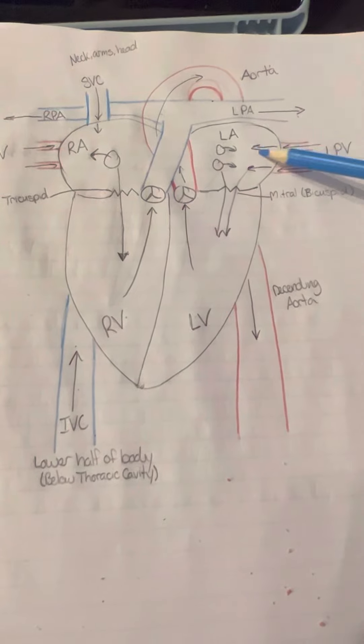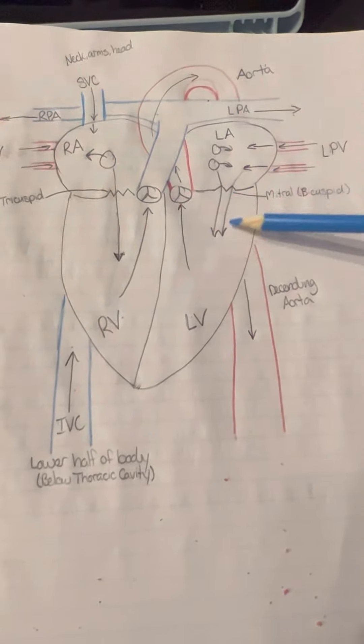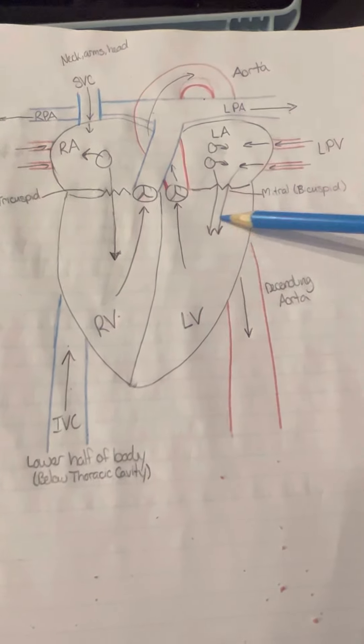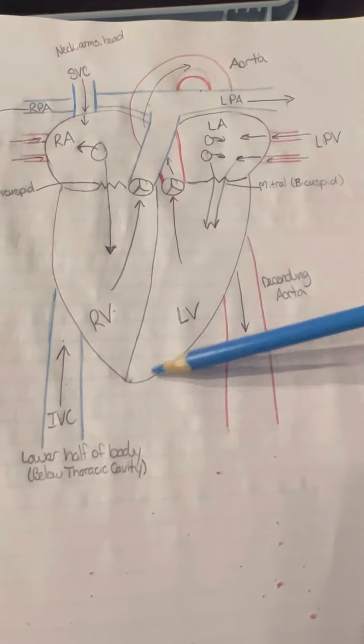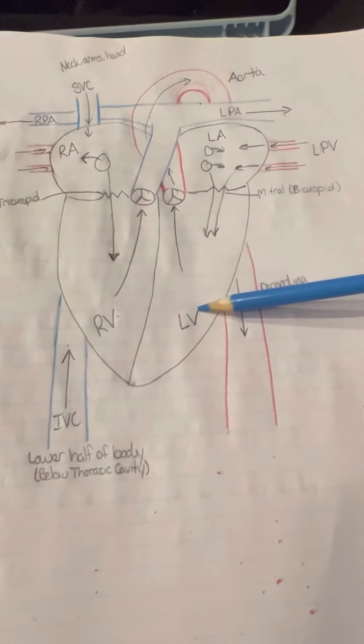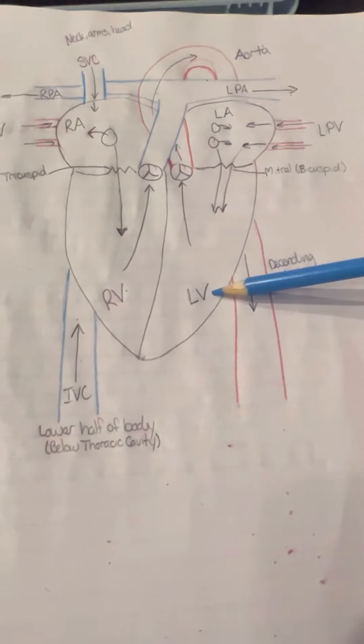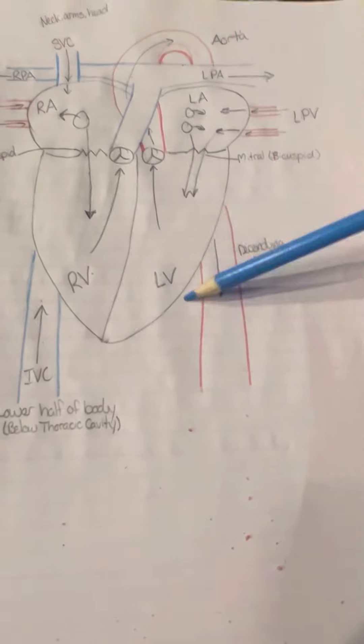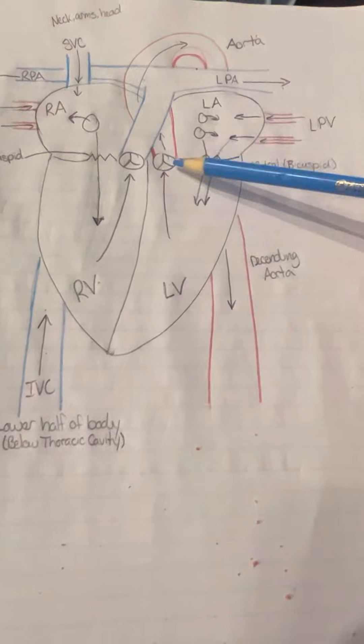The left atrium then contracts, pushes blood through the mitral or bicuspid valve into the left ventricle. The left ventricle, this is where you see most of the muscle of the heart. Its main job is to pump blood through the aortic semilunar valve into the aorta.